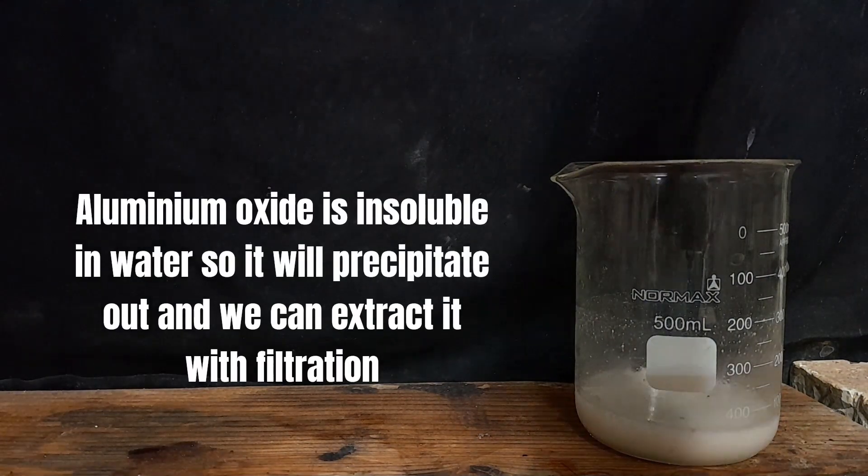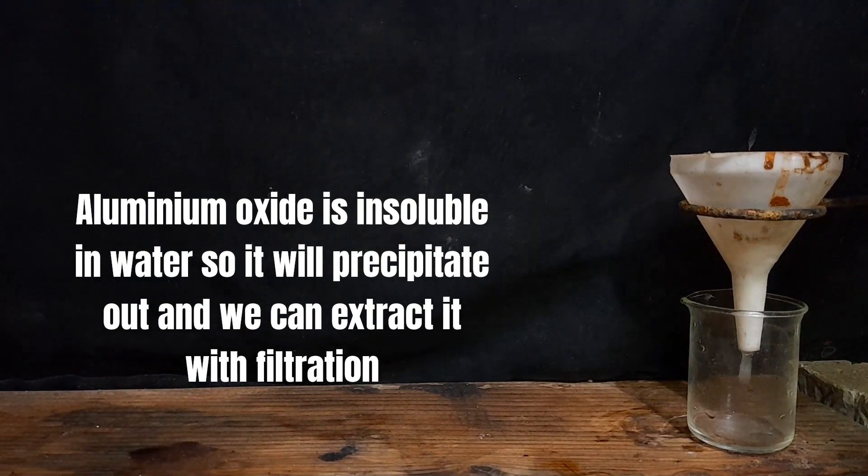Aluminium oxide is insoluble in water so it will precipitate out and we can extract it with filtration.